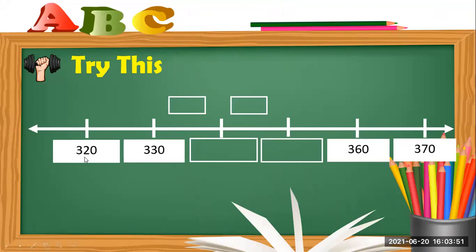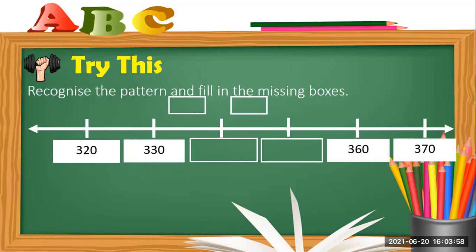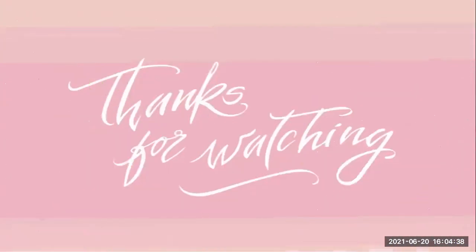Now let's try this one. We will recognize the pattern and fill in the missing numbers. From 320 to 330 — is it plus or minus? From 330 to the next box, that is plus 10, so 330 plus 10 equals 340. From 340 to the next box, we add 10 again, so 340 plus 10 equals 350. Thank you so much for listening, and see you next time — bye!